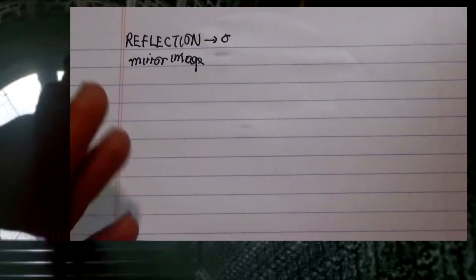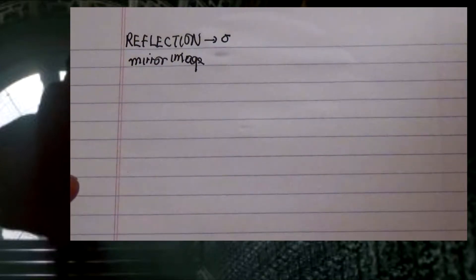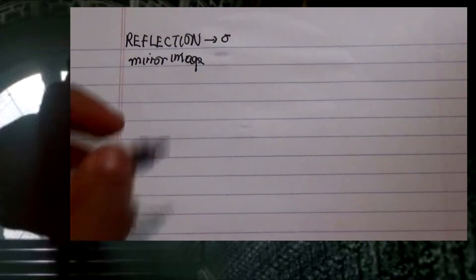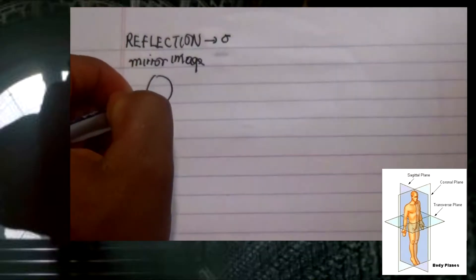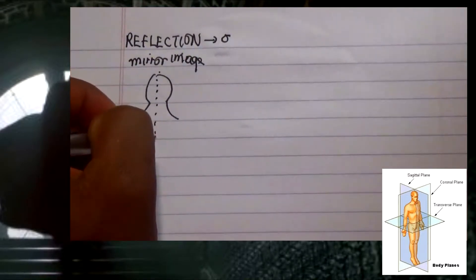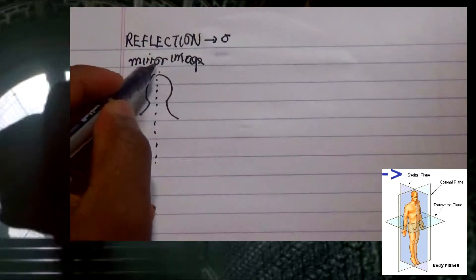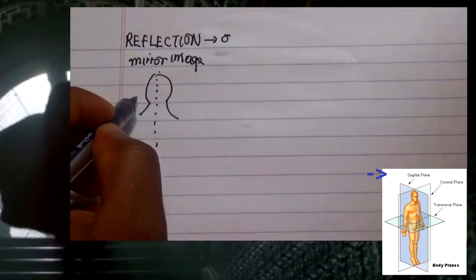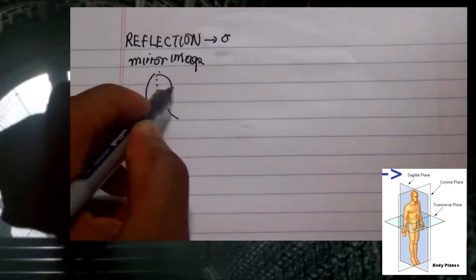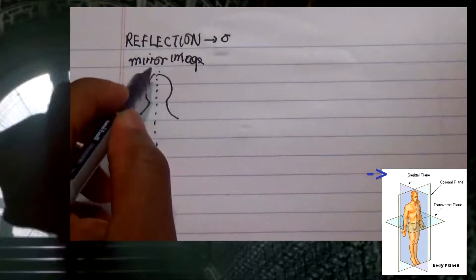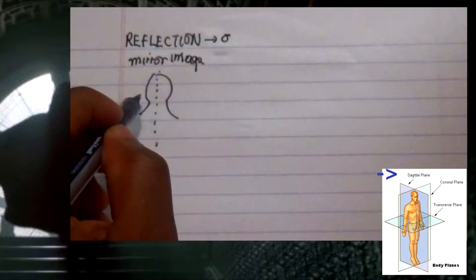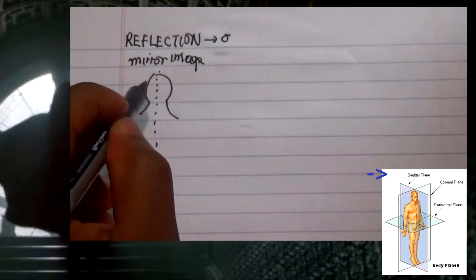Reflection has the symbol sigma. In various objects, we notice that objects have parts of their image where one part is a mirror of another. From our previous video, we discussed the human body — looking at the face, from head to toe, we have symmetry aligned in the middle where one side is the mirror image of the other side, and they are not superimposable with respect to each other.